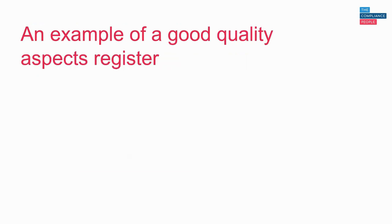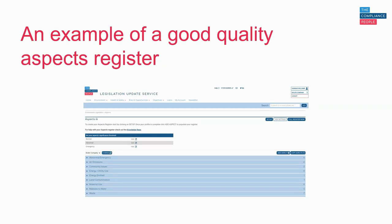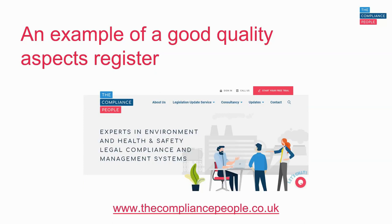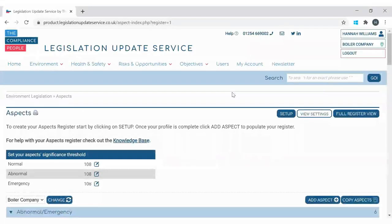For the next section of the webinar, in order to show you everything a good quality aspects register should contain, I'm going to log into our legislation update service system and go through an example aspects register. The legislation update service can be accessed at thecompliancepeople.co.uk, and we have free trials available for those who aren't current subscribers. So here we are within an example aspects register on the legislation update service.